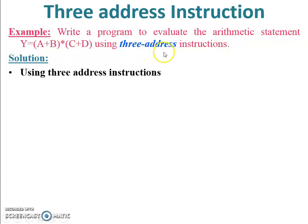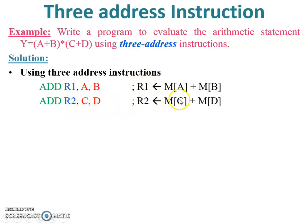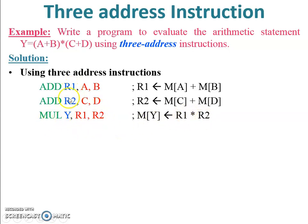Example: given an equation, write the program using three address instruction. Solution — ADD R1, A, B: memory of A plus memory of B stored in R1. ADD R2, C, D: memory of C plus memory of D stored in R2. MUL Y, R1, R2: multiplication of R1 and R2, and the final answer stored in memory location Y. So the result is Y = (A+B) × (C+D).